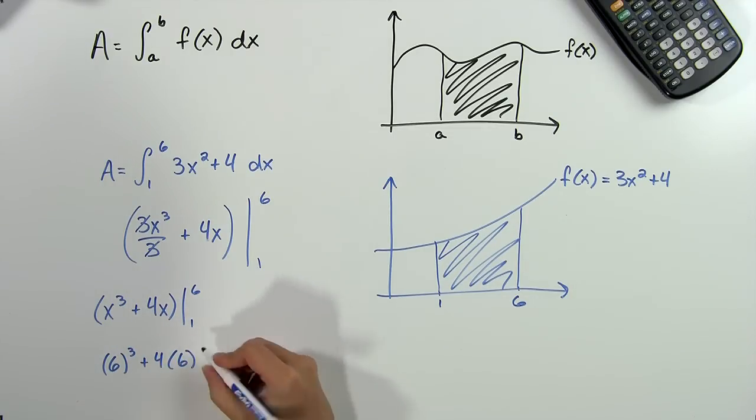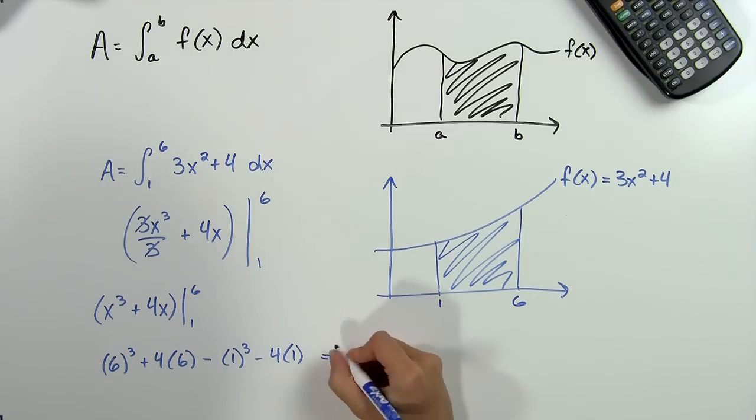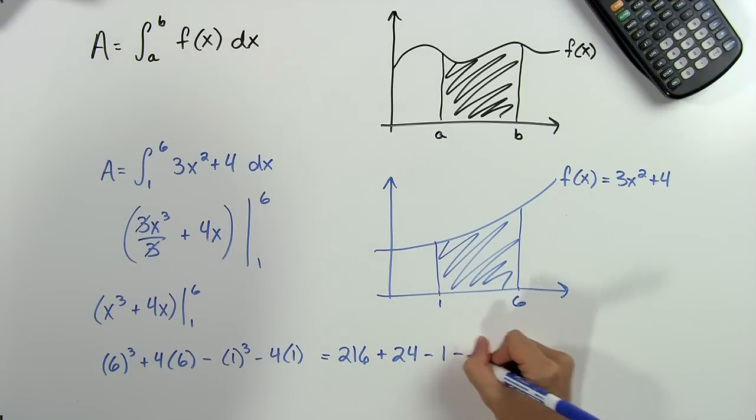and then we subtract and plug in 1, so we get 1 cubed minus 4 times 1. And we know that 6 cubed is equal to 216 plus 4 times 6 is 24 minus 1 cubed is 1 minus 4 times 1 is 4.